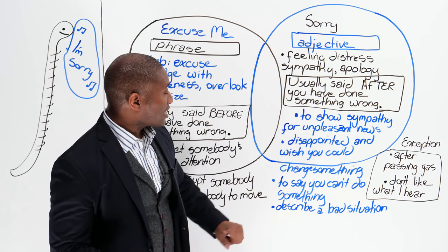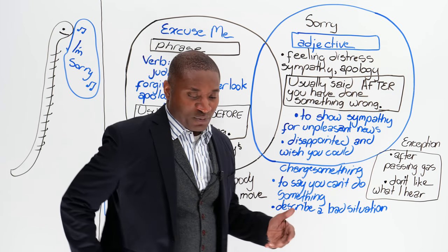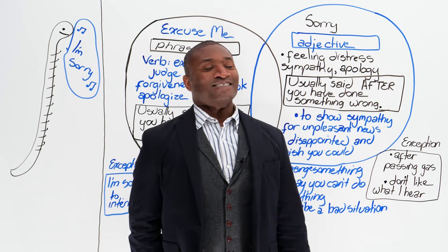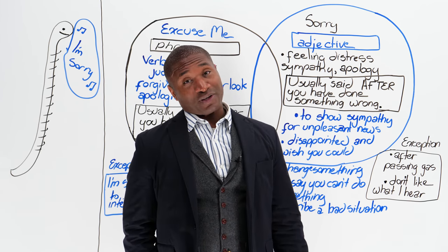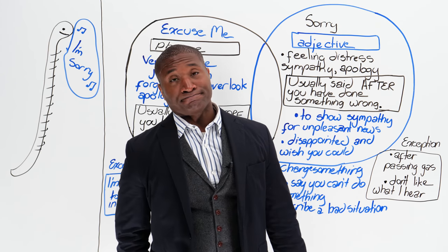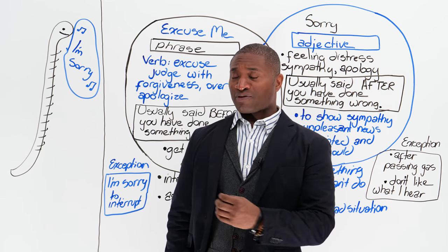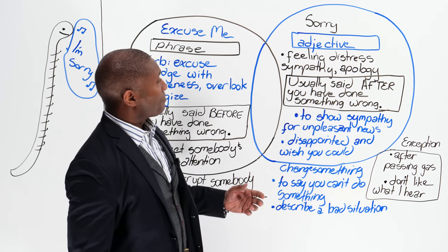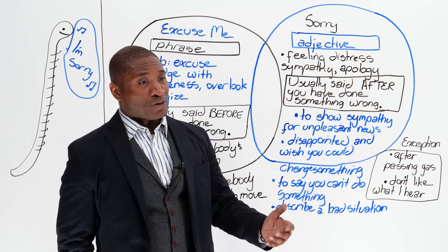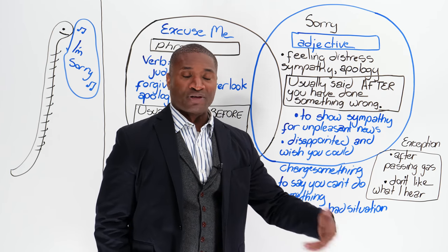Sorry to say you can't do something. Someone will say, hey, I'm having a party Friday night, can you come? You go, I'm sorry, I can't do it. I've got to work that night. Wish I could, but I just can't do it. Sorry. You can't use excuse me in this one — you have to say I'm sorry, because you are apologizing for your inability to attend that invitation.